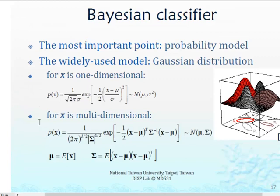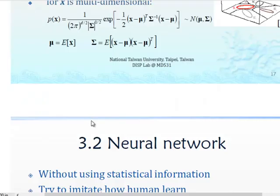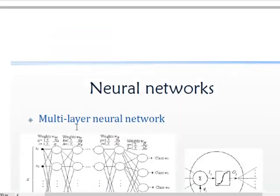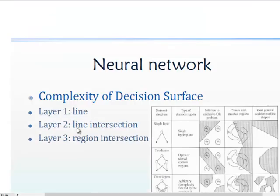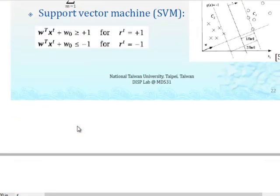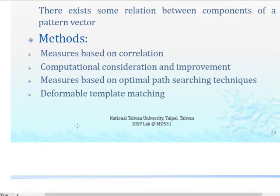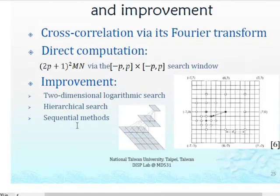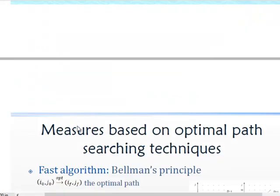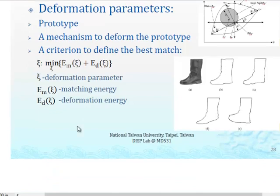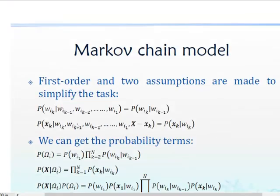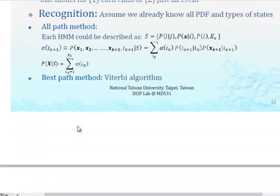We have already calculated from the normal distribution that if X is multi-dimensional, and X is one-dimensional from Gaussian distribution, we can calculate the probability value. This is essentially the neural network model, which we will discuss later. We will also be discussing different other methods like template matching, and by different methods we can measure different patterns.